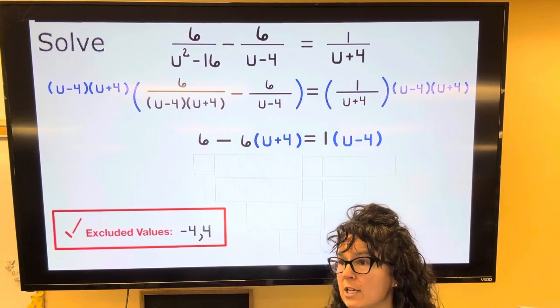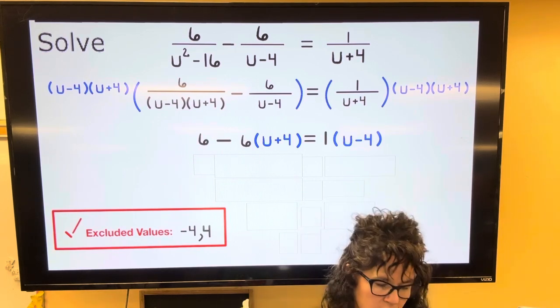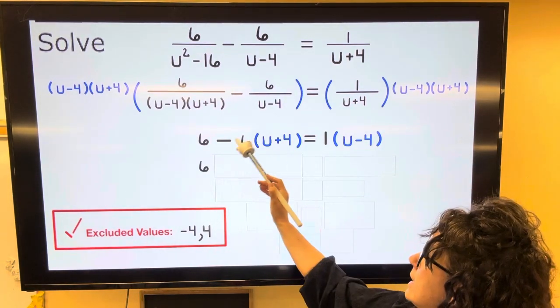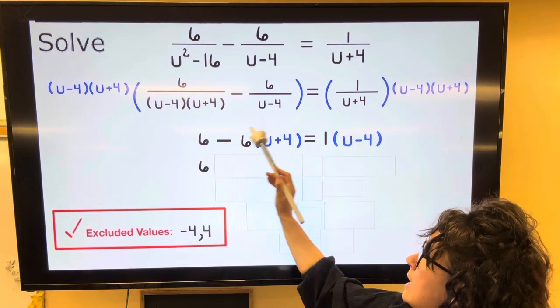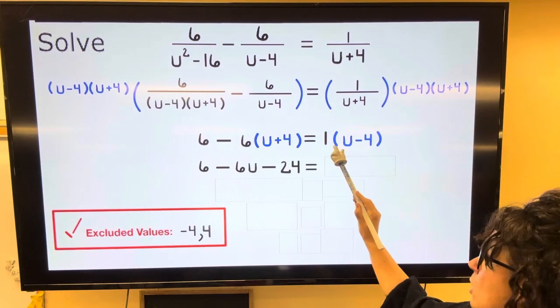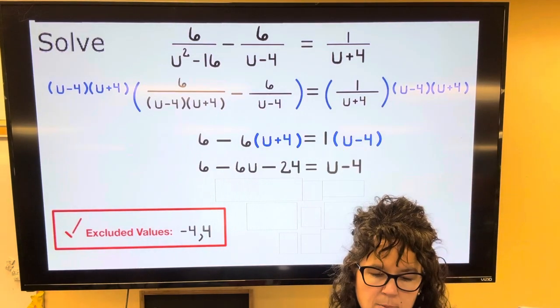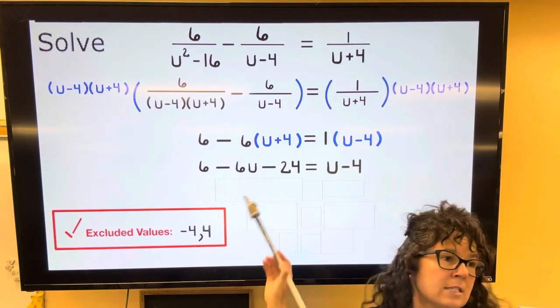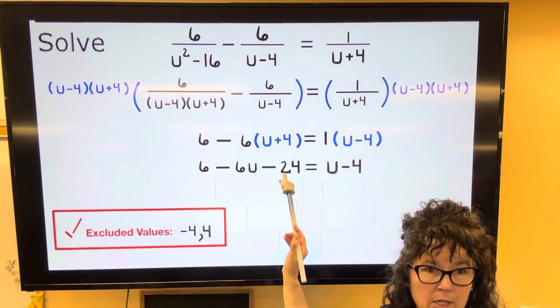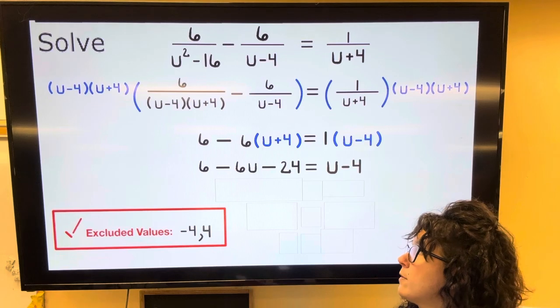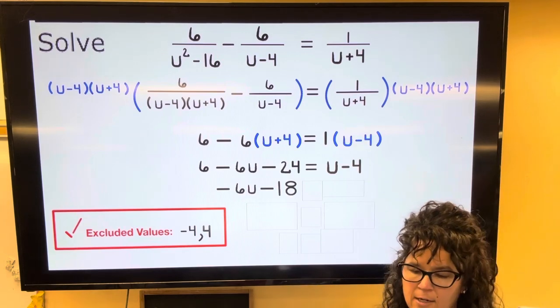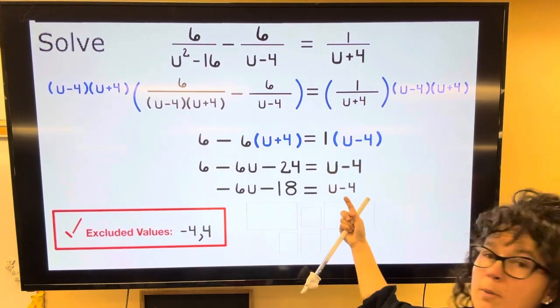This equation looks substantially easier now that all the fractions are gone. So let's go ahead and distribute. The 6 in front is still there. Negative 6 times U is negative 6U and negative 6 times 4 is minus 24. Bring down the equal sign. 1 multiplied by U minus 4 is just going to be U minus 4. I'm going to start simplifying on the left side, combining like terms. 6 and negative 24, those can go together and 6 minus 24 is negative 18. So I'm going to have this negative 6U minus 18. Bring down the equal sign and bring down the U minus 4.